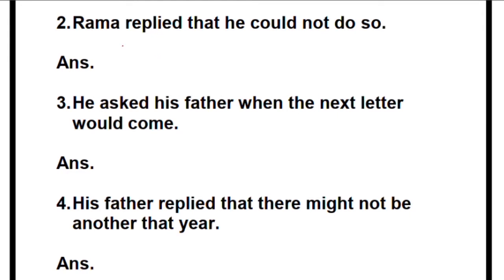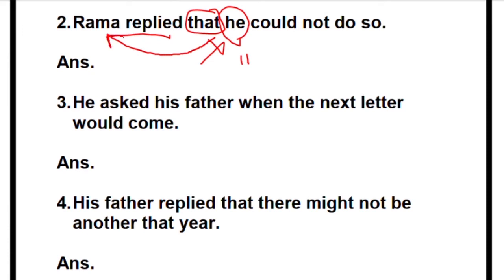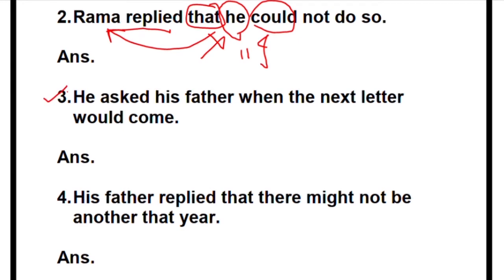Second one: 'Rama replied.' Write 'Rama said,' with a comma. We do not use 'that' in direct speech, so remove it. Open the quotes — who is 'he'? This 'he' is Rama himself, talking about his own self, so change 'he' to 'I.' 'Could not' — change it back from past to present: 'cannot.' So: 'Rama said, I cannot do so.' Full stop, then close quotes.